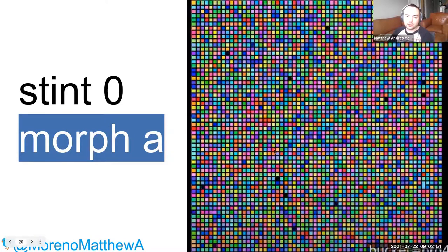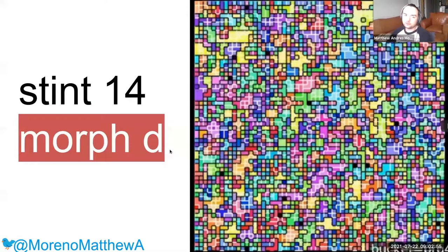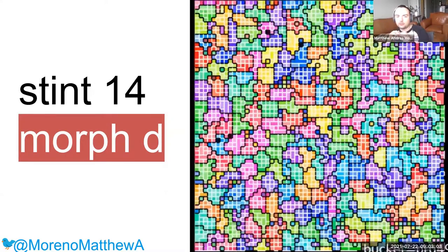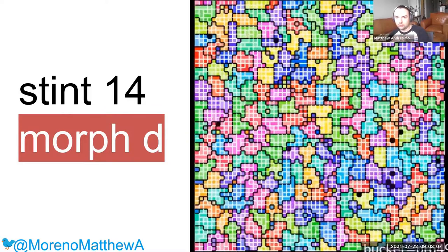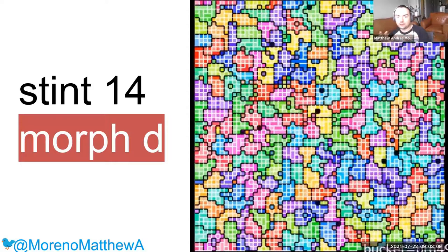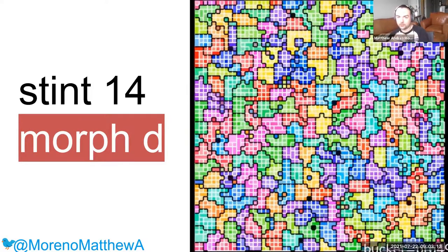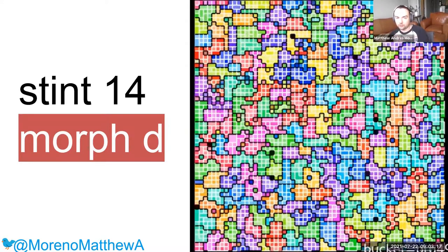Later on in evolution, we observed the emergence of larger kin groupings, and it had kind of a regular size and a roughly symmetrical shaping. We refer to this particular morph as morph D.